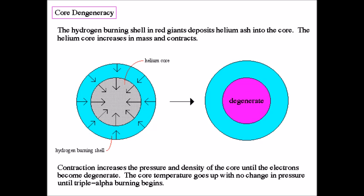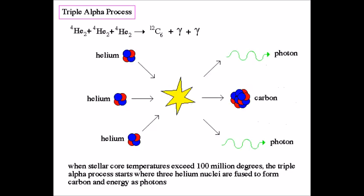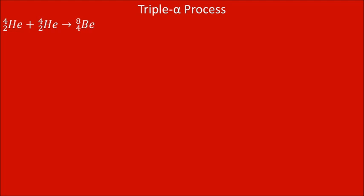The contraction of the core causes it to heat up until eventually it gets hot enough to start fusing helium through the triple-alpha process. In the triple-alpha process, two helium nuclei or alpha particles combine to form beryllium, which rapidly combines with another helium nucleus to make carbon-12. Carbon-12 can sometimes combine with another helium atom to make oxygen-16.